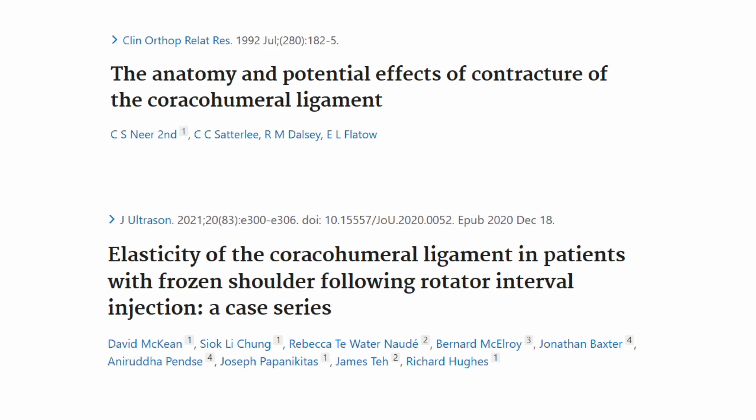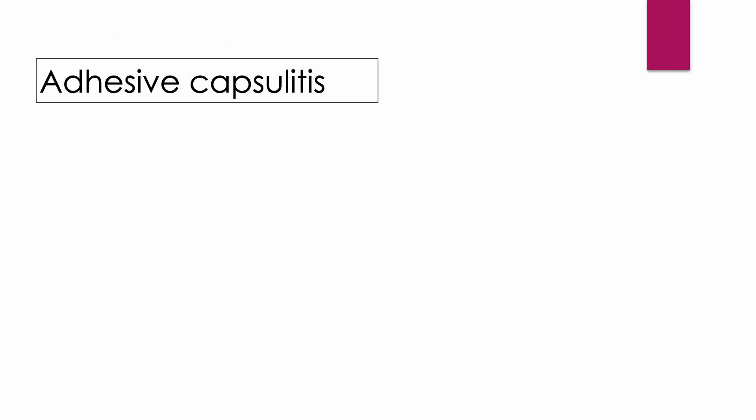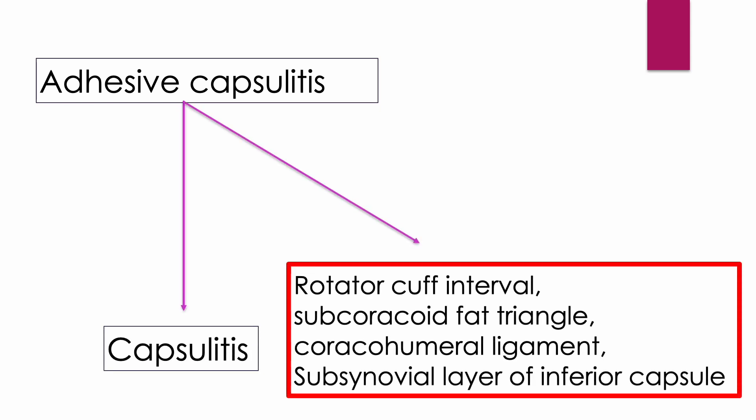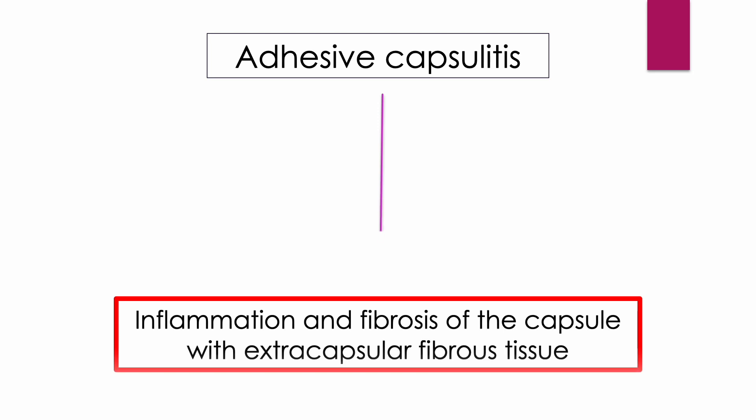Even MRI studies showed abnormalities in the subcoracoid fat triangle and the coracohumeral ligament. The coracohumeral ligament could be a critical key factor and a game-changer. The pathologies of adhesive capsulitis are not confined to the joint capsule but involve the rotator cuff interval, subcoracoid fat triangle, coracohumeral ligament, and subcynovial layer of the inferior joint capsule. It is a disease of inflammation and fibrosis in the capsule and extracapsular fibrous tissue, especially the coracohumeral ligament.